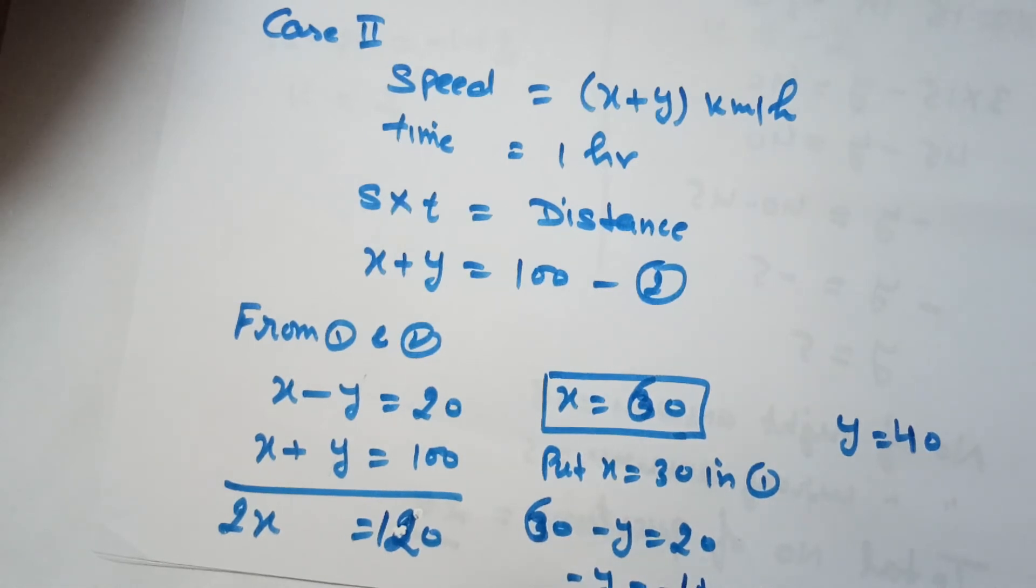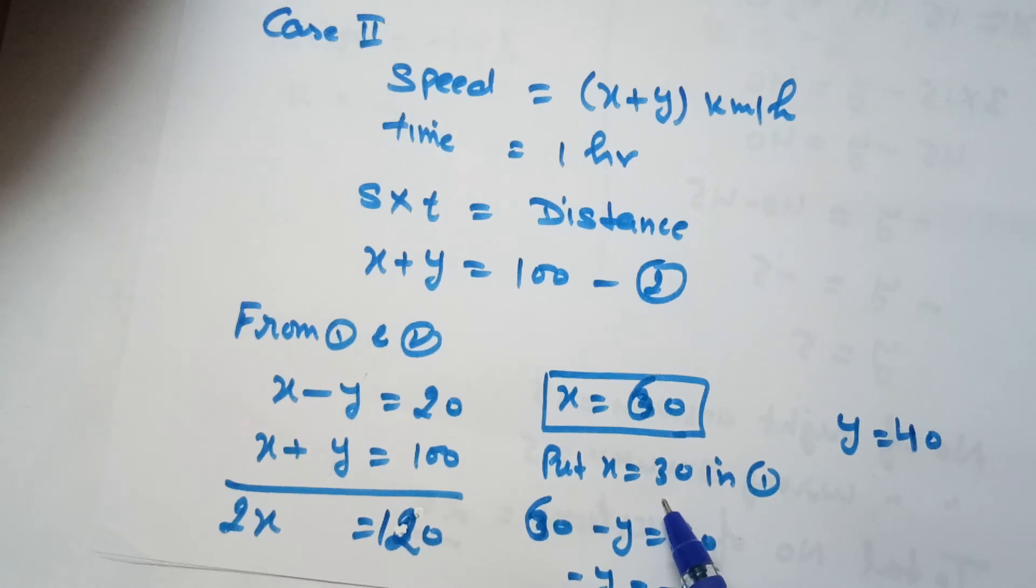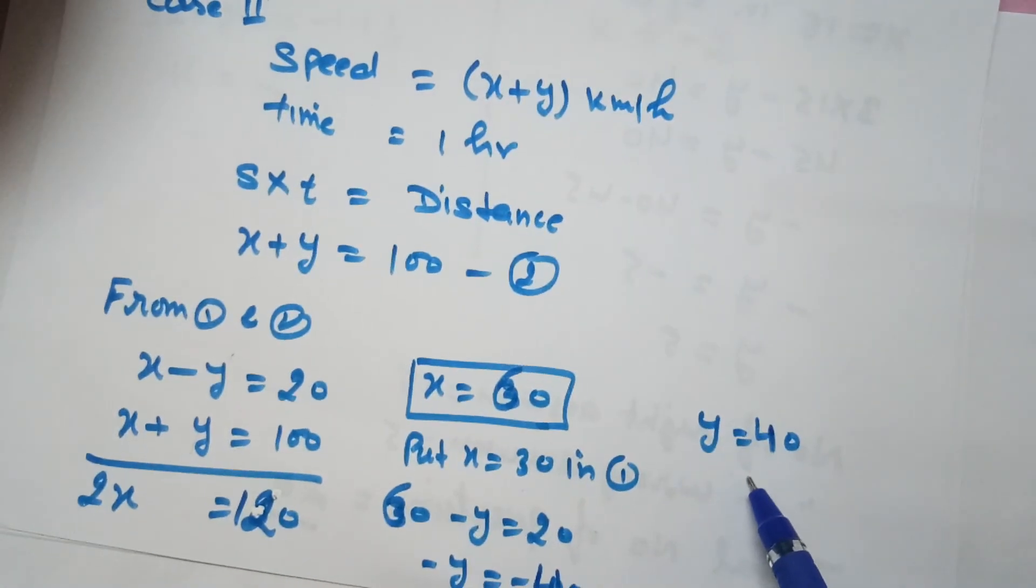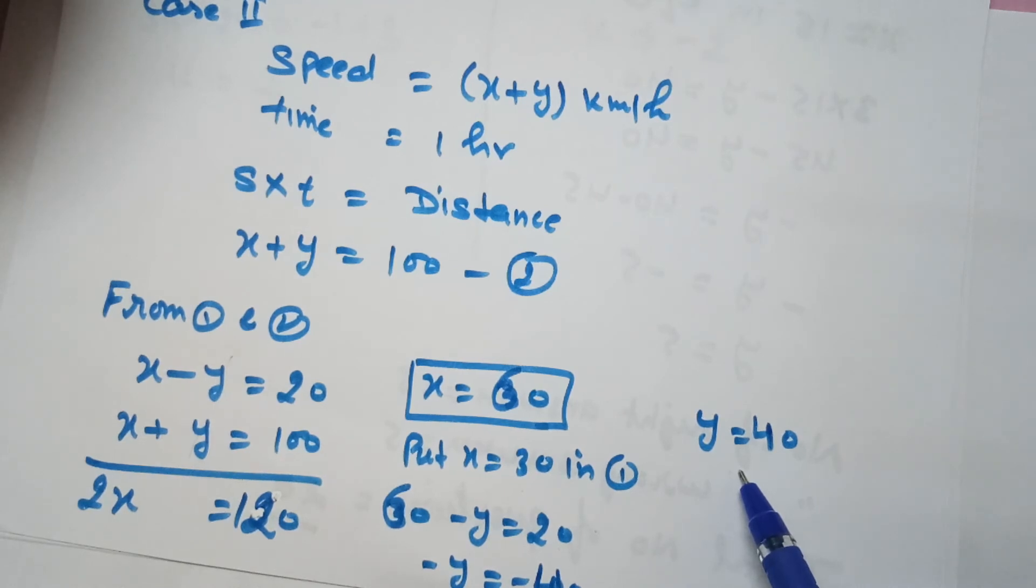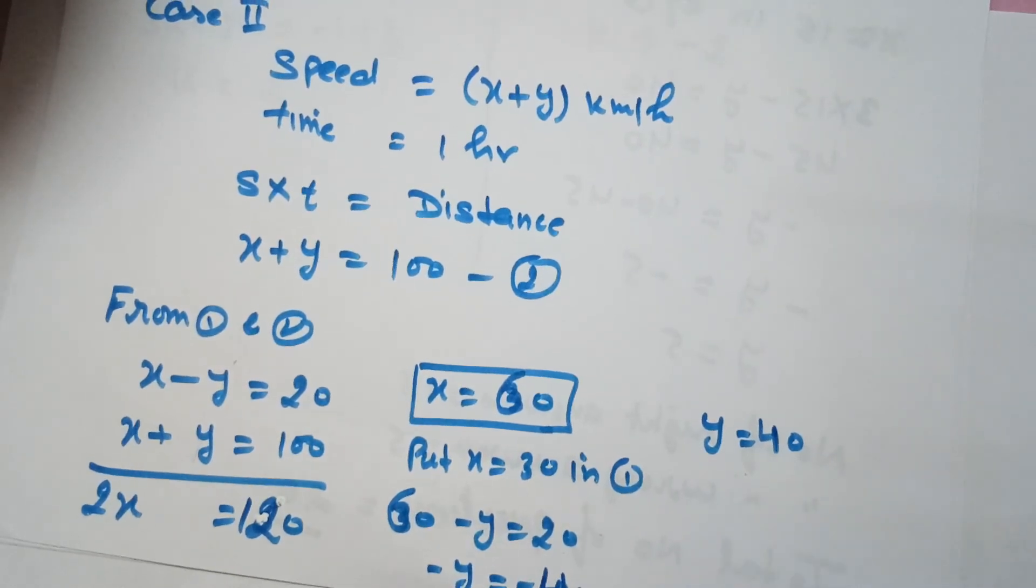Therefore -y=-40, so y=40. x is the speed of the first car which equals 60 km/h, and y is the speed of the second car which equals 40 km/h.